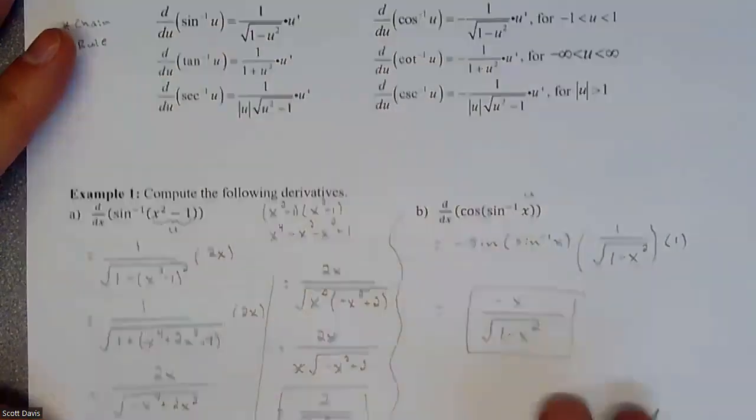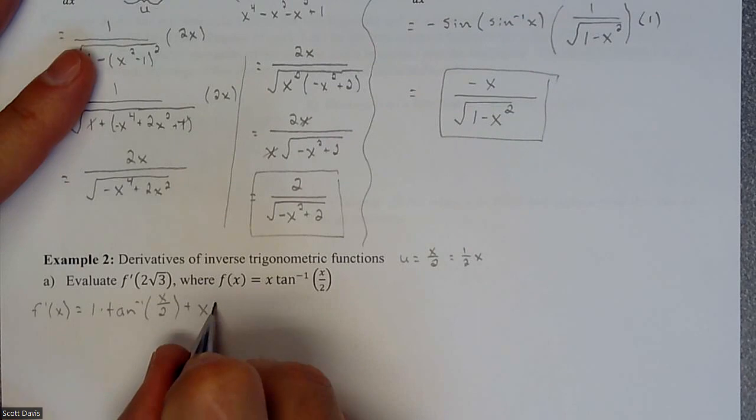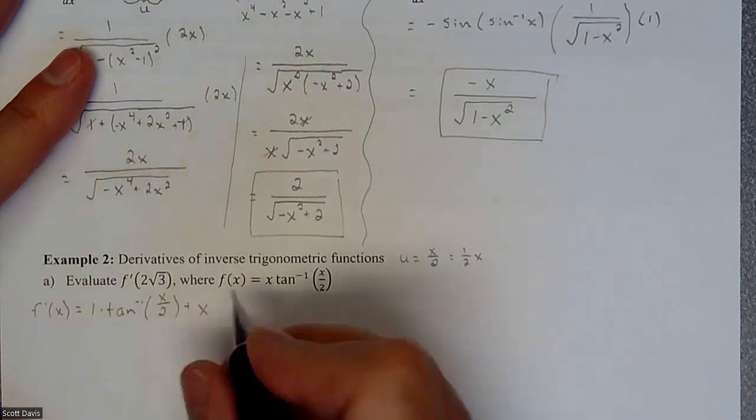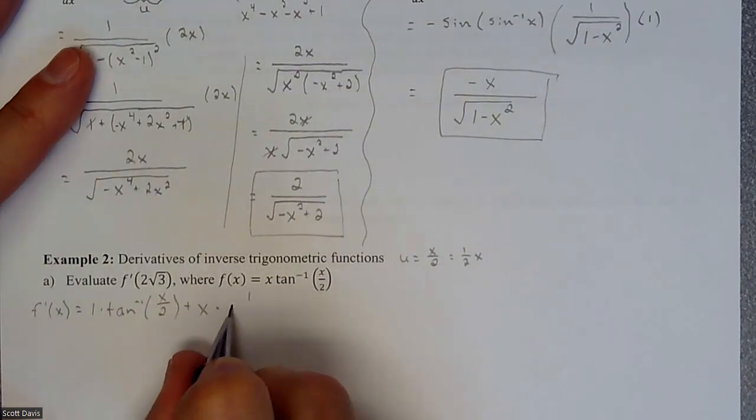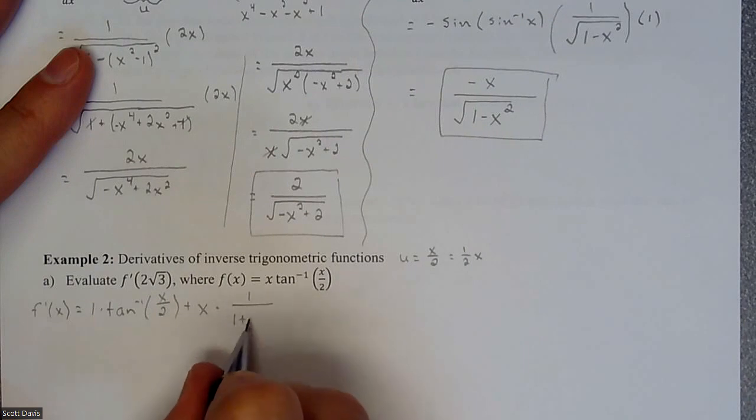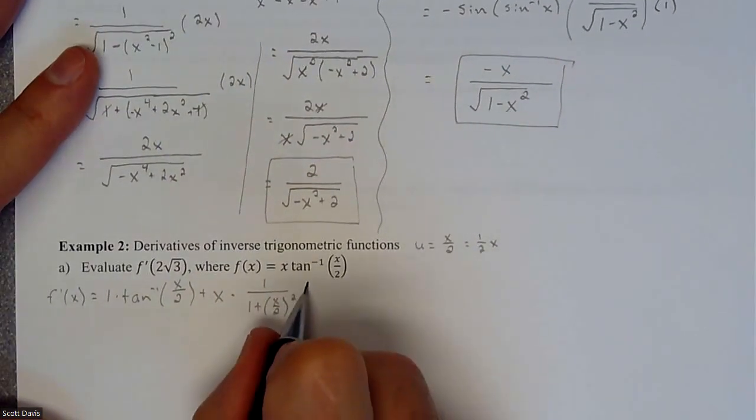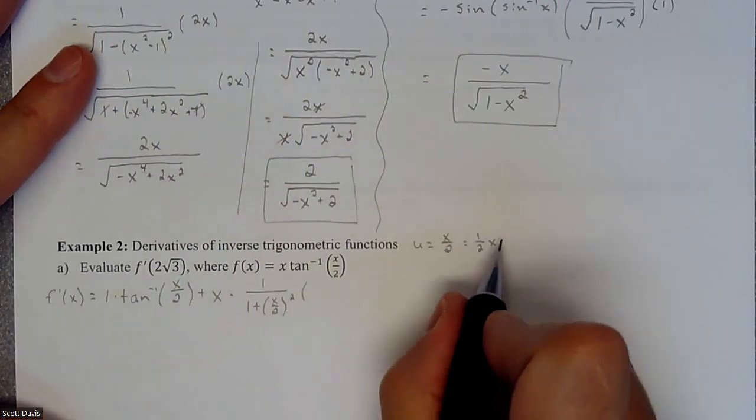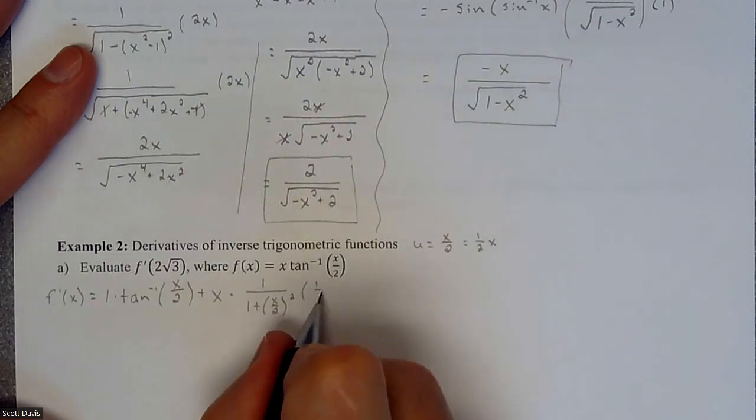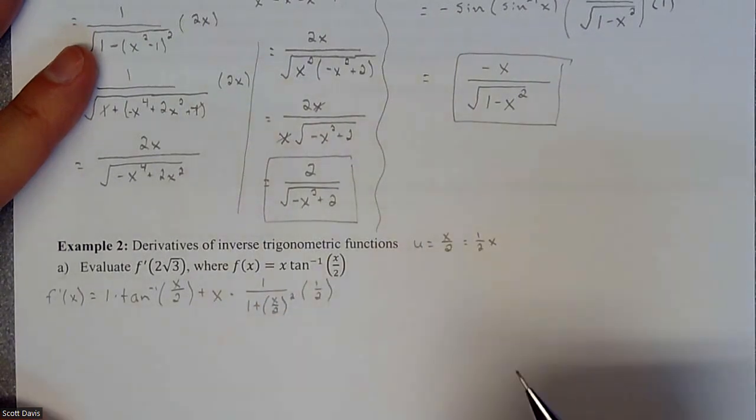Here's our formula for doing the derivative of it, it's going to be one over our u squared. So times one over our one plus u, which is x over two squared, times the chain rule, so then times the derivative of that, which is one half.